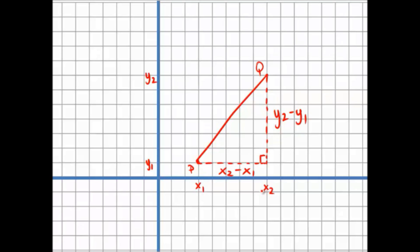So, if we use the Pythagorean theorem, we can find our missing side, d.